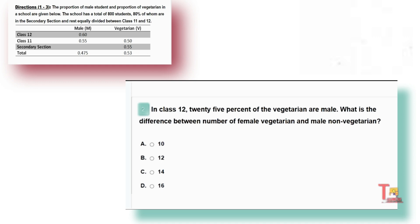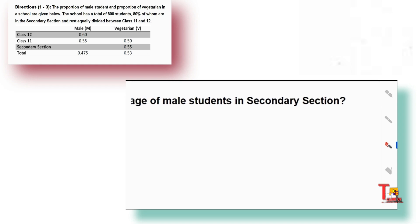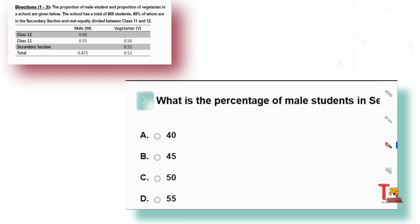Now let's go to the third problem, which can be asked from the same data set: what is the percentage of male students in the secondary section? The secondary section's male percentage is not directly given, so we have to calculate it — similar to how we found class 12 vegetarians. We will first calculate 47.5% of total, then 55% of class 11 and 60% of class 12, then subtract both from the total to get the secondary section's male count.